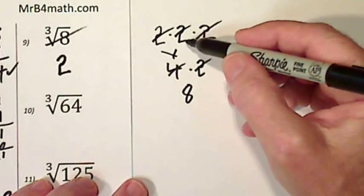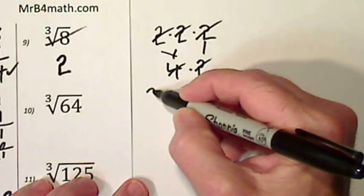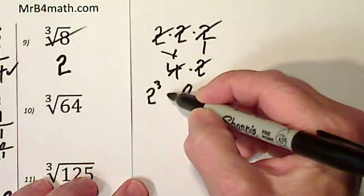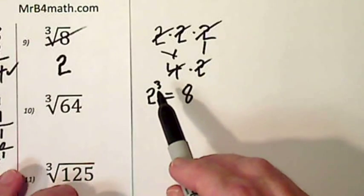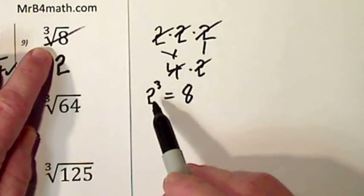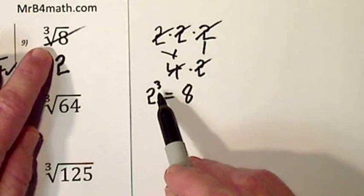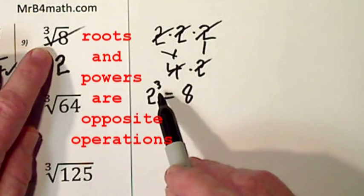Another way to express this would be 2 to the third power is equal to 8. So notice, taking the roots and raising to powers are opposite operations.